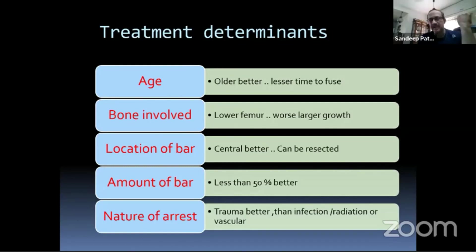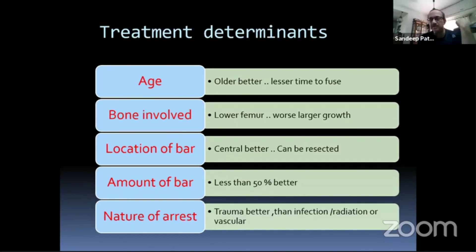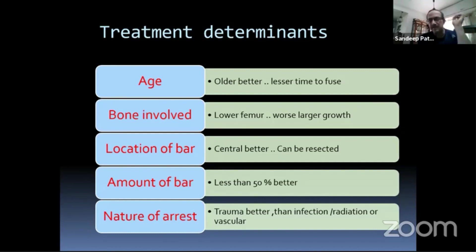The fast-growing physes — lower femur, upper tibia, or upper humerus — have the worst prognosis because they contribute the largest amount of growth. The same kind of bar around the elbow or the distal tibia will have a lesser implication. Location of the bar also matters: central as well as peripheral bars, if small and localized, can be well resected.